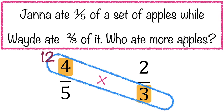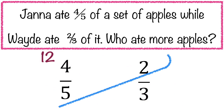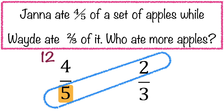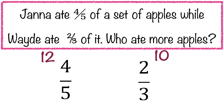We're going to write 12 beside the numerator of the first fraction. Next, let's multiply the denominator of the first fraction by the numerator of the second fraction. We have 5 times 2, which is equal to 10. We will write 10 beside the numerator of the second fraction. So now, let's compare 12 and 10. 4 fifths is greater than 2 thirds because 12 is bigger than 10.